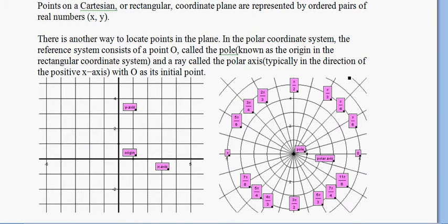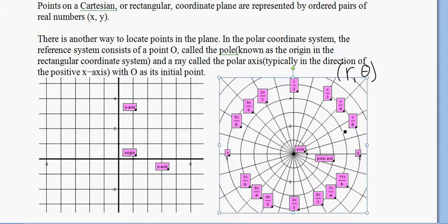So all of our angles are of the form, some radius and then some angle theta. So a real simple one would just be if I had 2, π/6. Here's my radius of 2, and then here's my angle π/6, so that would be that point right here.